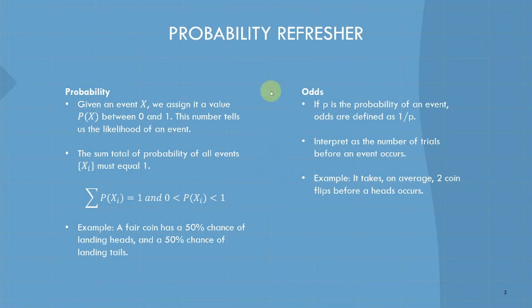So, probability. Before we start, we need to understand what a probability is. You've definitely heard the term before and have some intuitive idea of what it is. You turn on the weather channel and see there's a 25% chance of rain. You know intuitively there's a 50-50 chance of landing heads or tails if you flip a coin. Mathematically speaking, what exactly is a probability? Given an event X, we assign it a value, a number between 0 and 1. This number tells us the likelihood of an event.